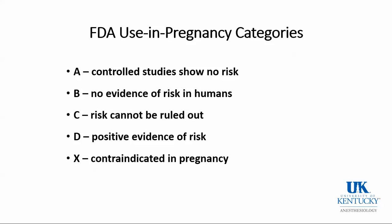Category C is similar to B in that risk can't be ruled out, but there isn't positive evidence of risk. Drugs get put into Category C if, for instance, animal studies showed adverse effects but there have been no reports in humans, or if there isn't a large body of evidence of the drug being used in pregnancy.